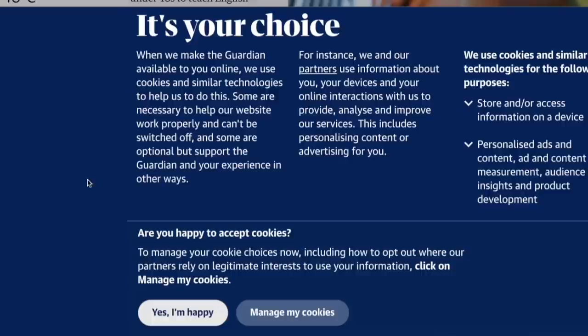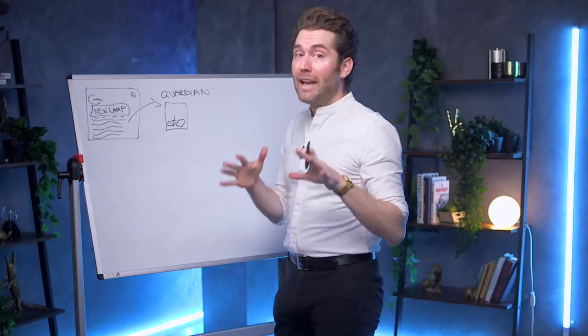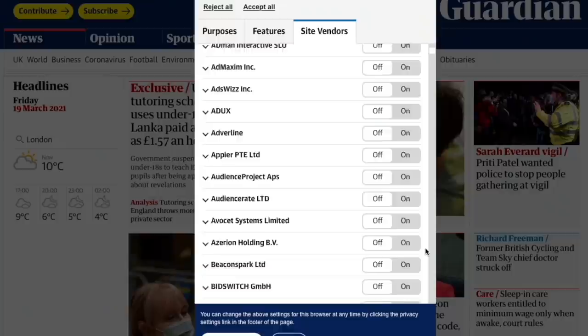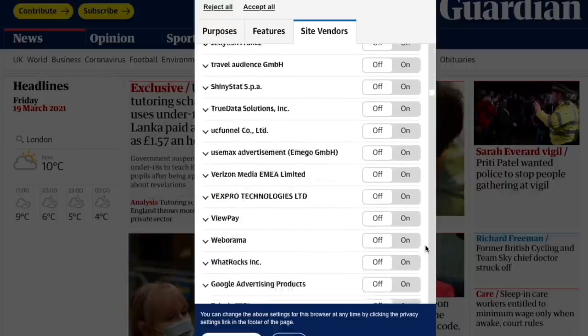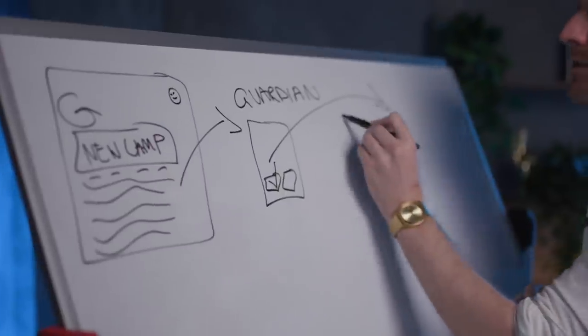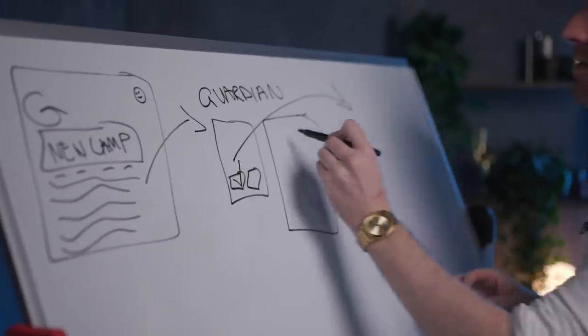Now what you've done by clicking accept is actually give roughly 500 companies access to your use of what you do on the Guardian's website. Now we're going to come back to those over here later. For now, let's just look at this Guardian review.